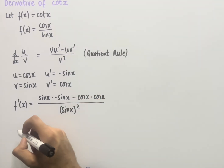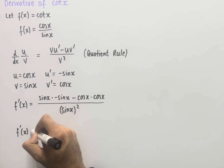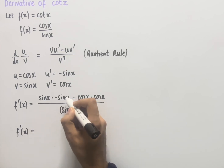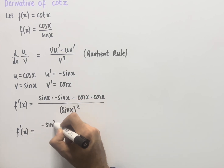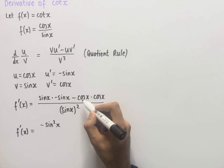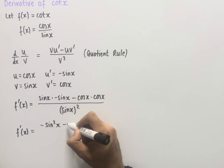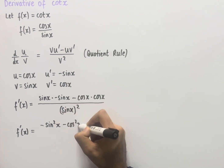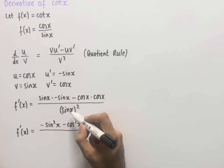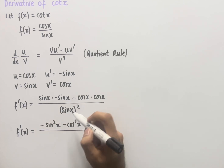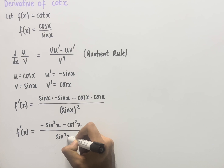Simplifying this, we end up with f dash of x which equals: sin x times minus sin x is minus sin squared x, and we have minus cos x times cos x which is minus cos squared x, and then this is all over sin squared x.